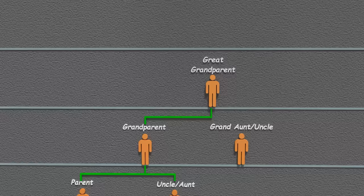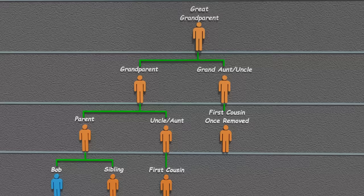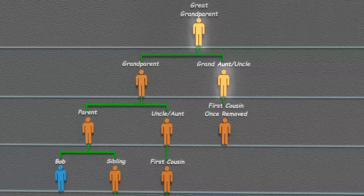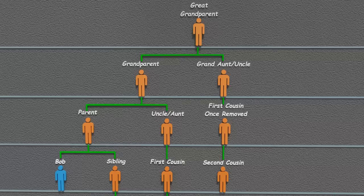Continuing upward, here's Bob's great-grandparent, and here's Bob's grand-aunt or uncle. A child here is once again Bob's first cousin once removed. This time it's reversed — Bob has to go up three generations, and his cousin only has to go up two generations.